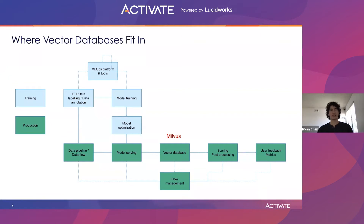Here we have a diagram showing an example flow of a very generalized machine learning pipeline. For the most part, it's very textbook stuff. First, you build and train your machine learning model to generate your embedding vectors. Next, you want to build up the vectors to store in your vector database so you can query against them. The most straightforward way is to simply run your model on your entire corpus of data that you want to make searchable.